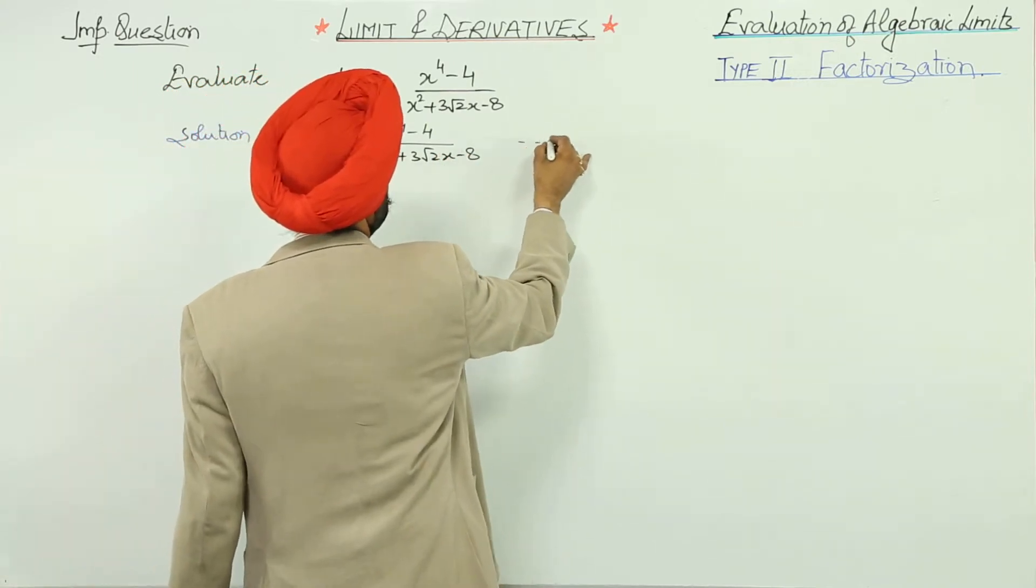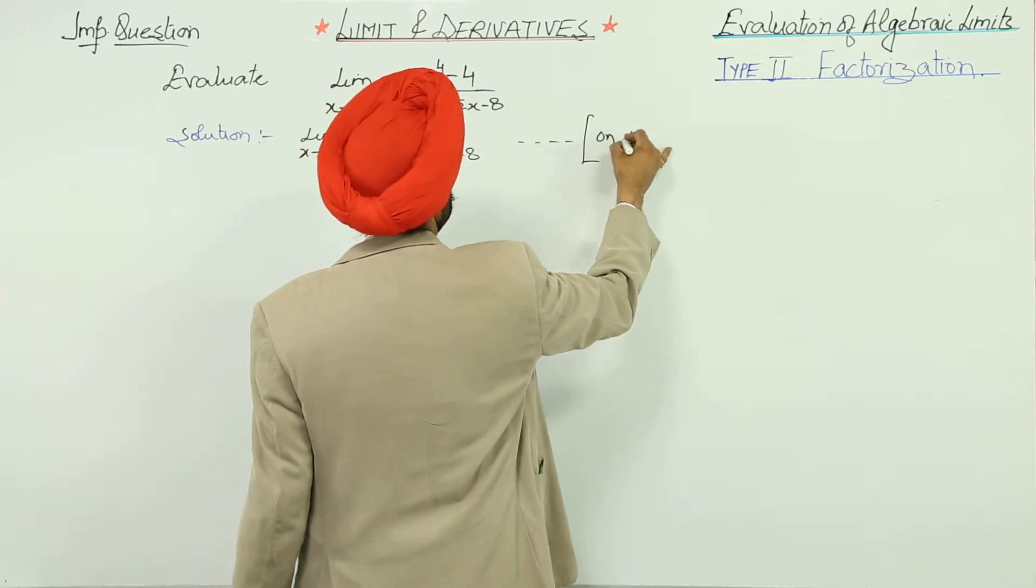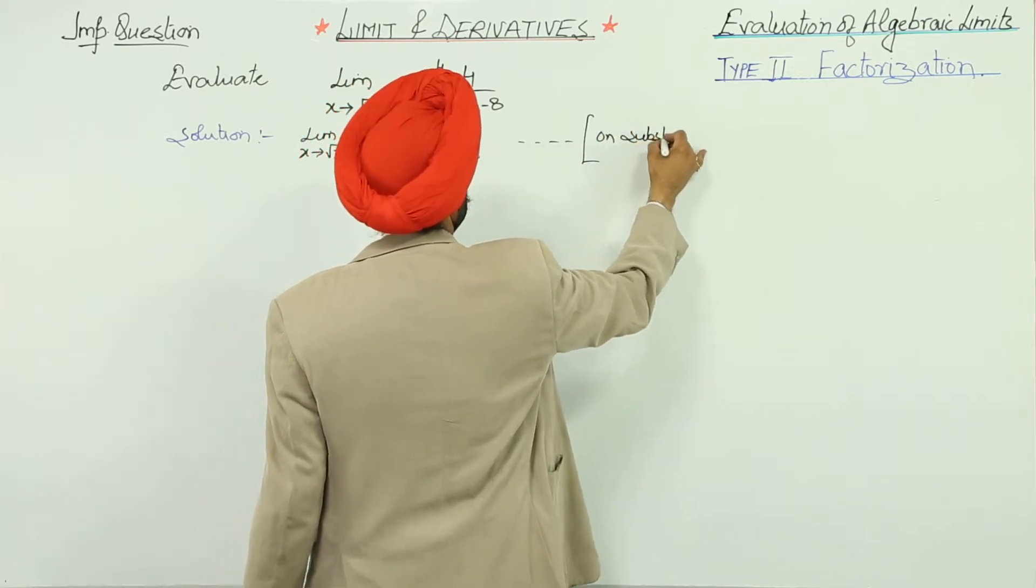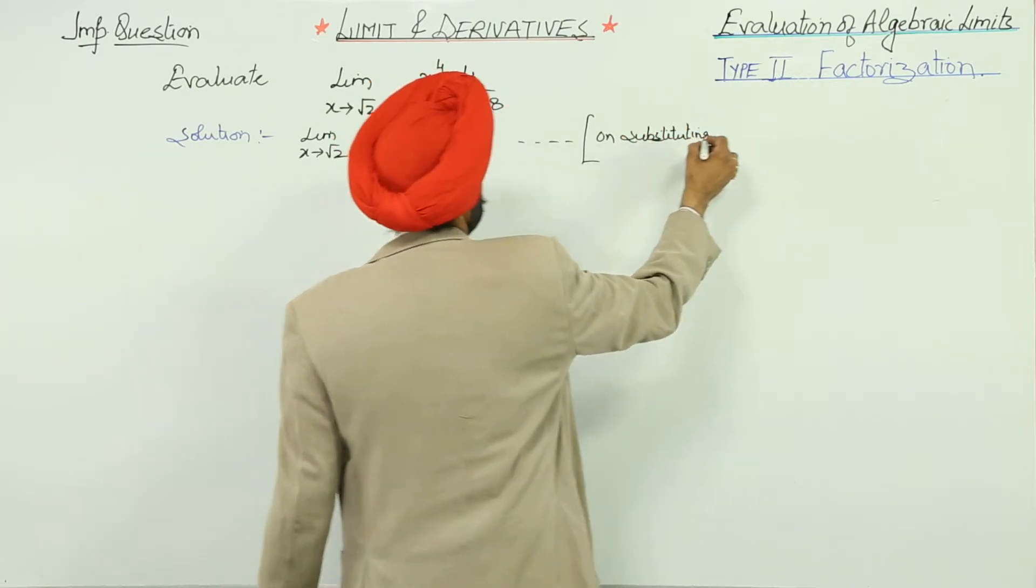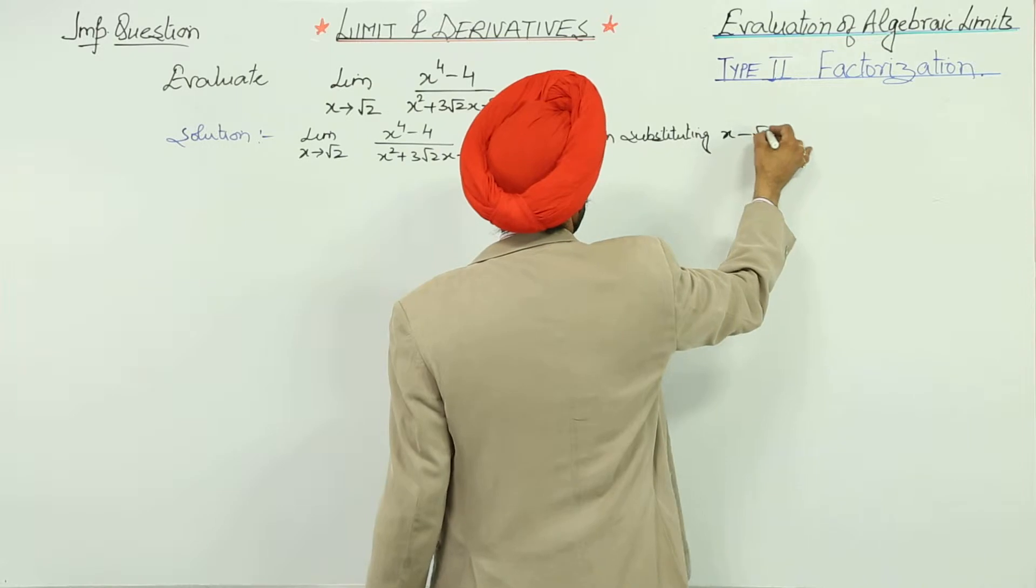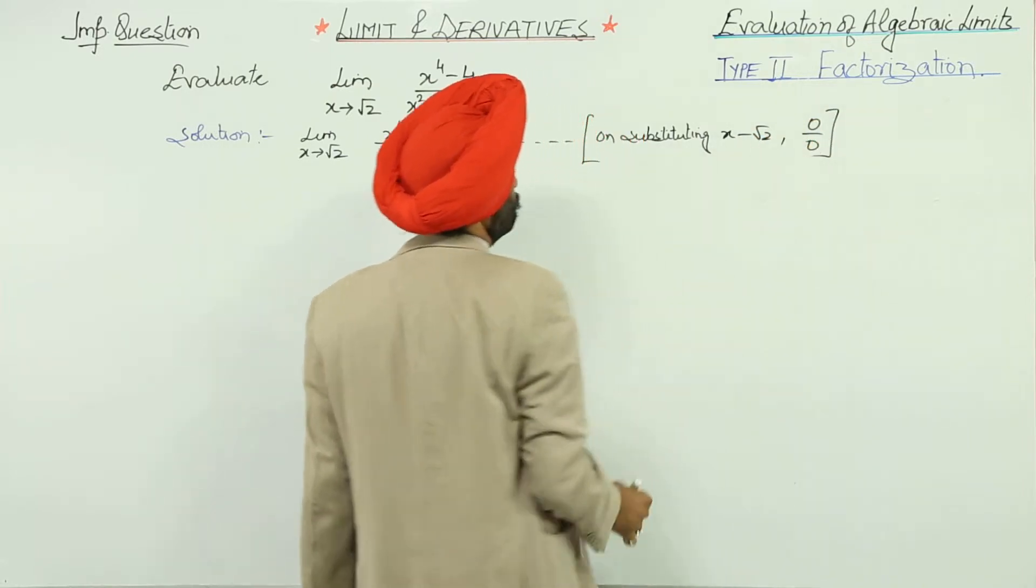Now this becomes on substituting x approaches to root 2, we get the question in the form of 0 upon 0.